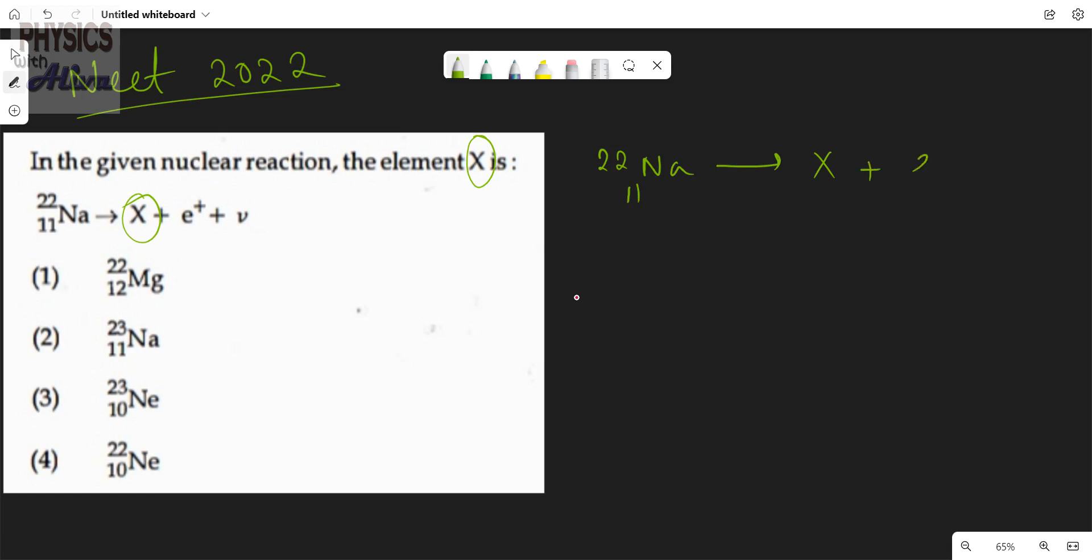This is e plus, this is positron, antiparticle of electron, and this is neutrino.